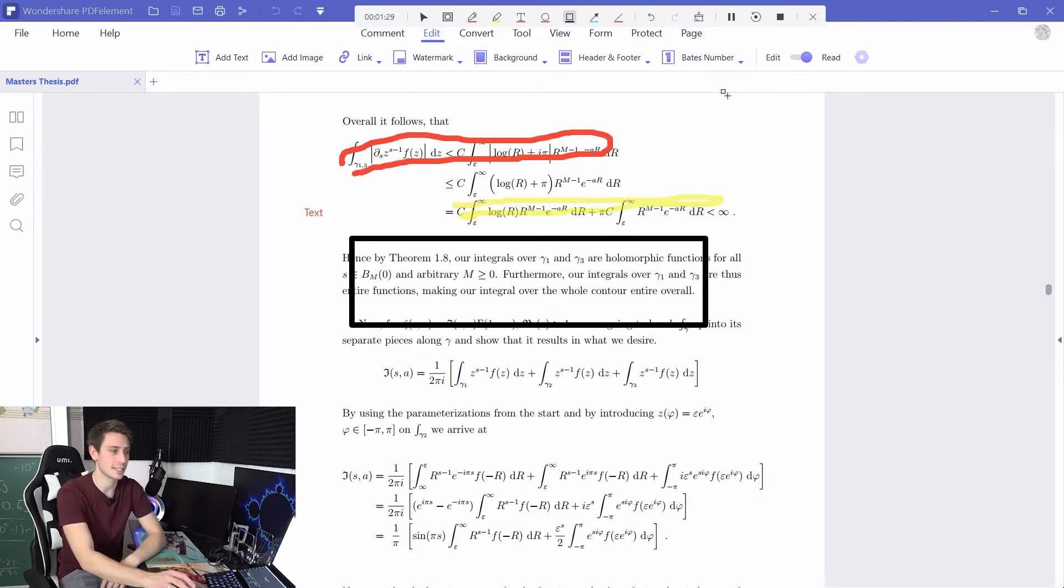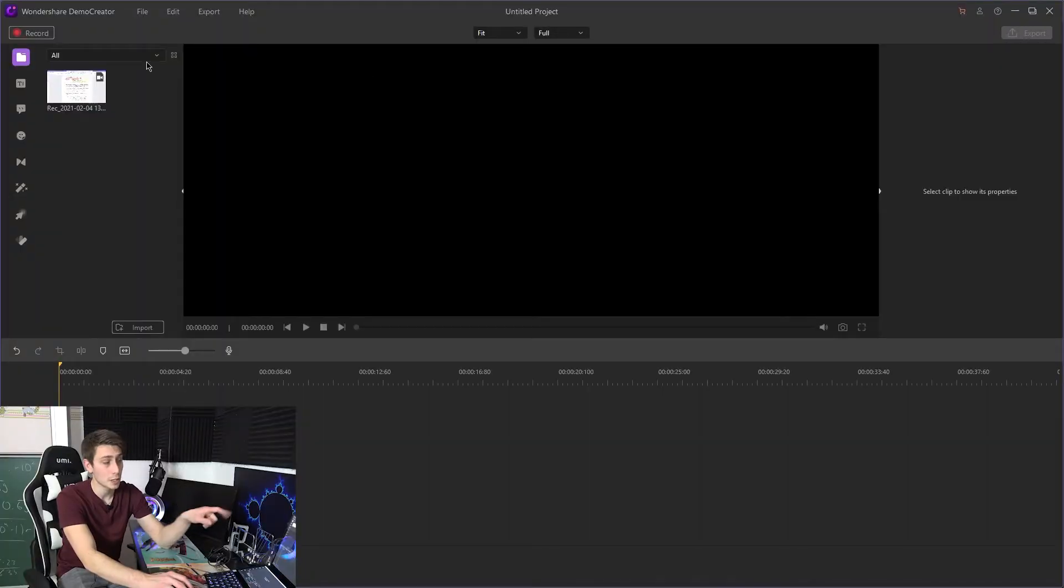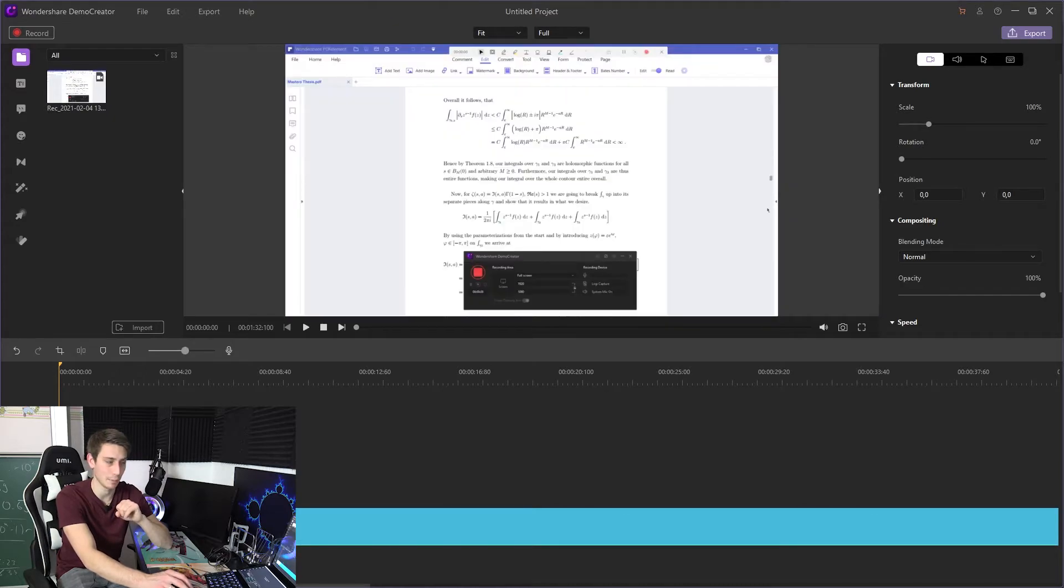Other than that, once you're done with your presentation, make sure to click on the stop button up here or press the F10 button and then Wondershare Demo Creator is going to track you over right into its editing interface. Once you're in here you are going to grab your recorded file and drag it down here into the timeline.